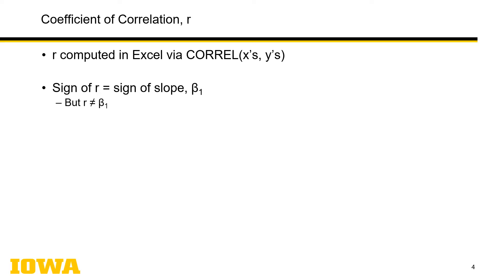When instruments are very similar, they give closely identical numbers — when both low they're both low, when both high they're both high. In that case, you would hope the slope is 1, so for whatever value of x (instrument A) you get a value of y (instrument B). You will hopefully get an r close to 1 and a beta 1 close to 1. But that's an example where there's confusion — don't consider r and beta 1 to be identical.